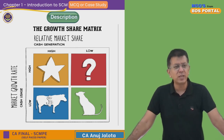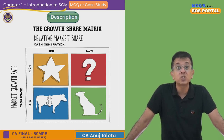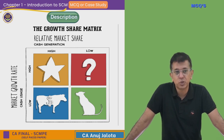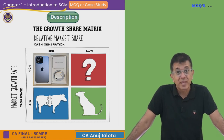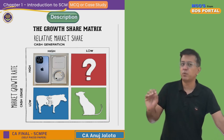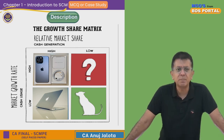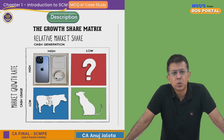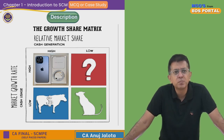Let me give an example using Apple, which has many products. A Star product has high market share and high growth rate — that would be the iPhone. The iPhone has a very high growth rate and brings in a lot of revenue, so high growth rate and high market share — iPhone is classified as a Star. For Cash Cow, a good example would be MacBooks.